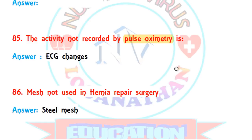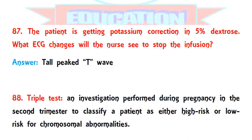Question 86: the mesh not used in hernia repair surgery. Among the four options given, the one not commonly used for hernia repair is the steel mesh.